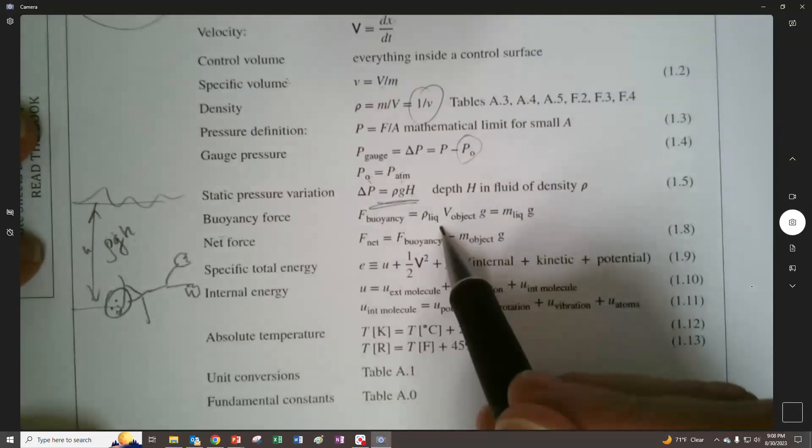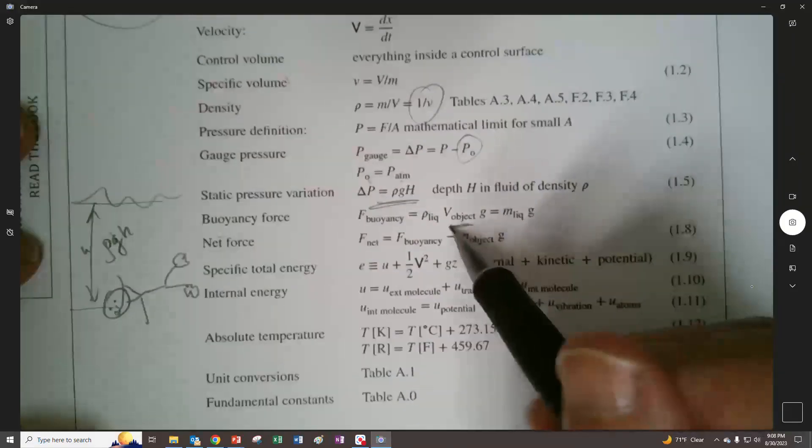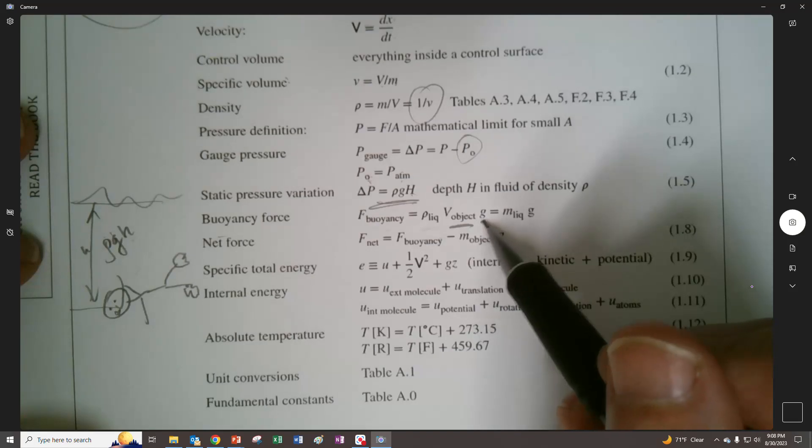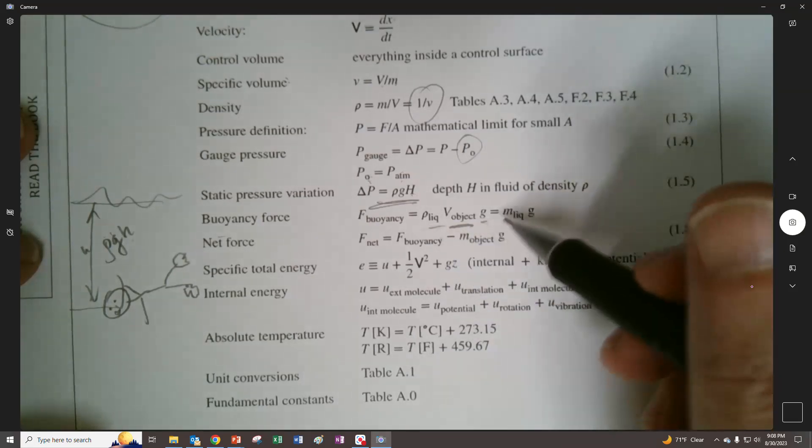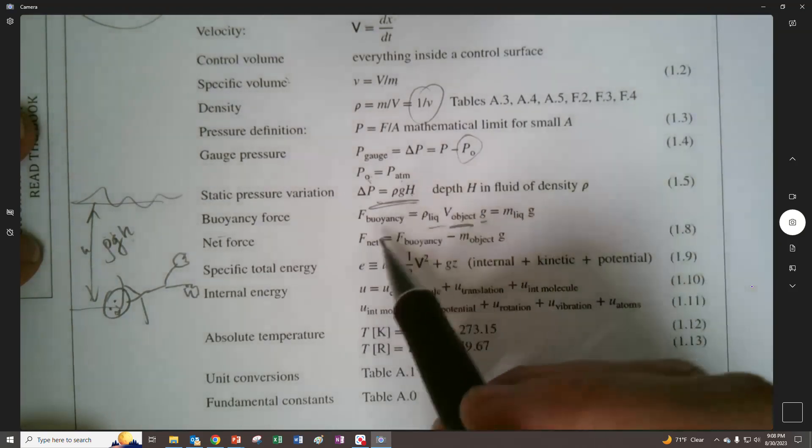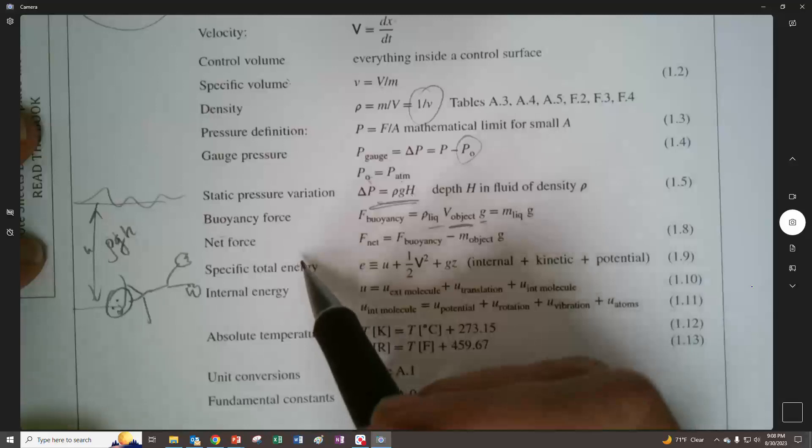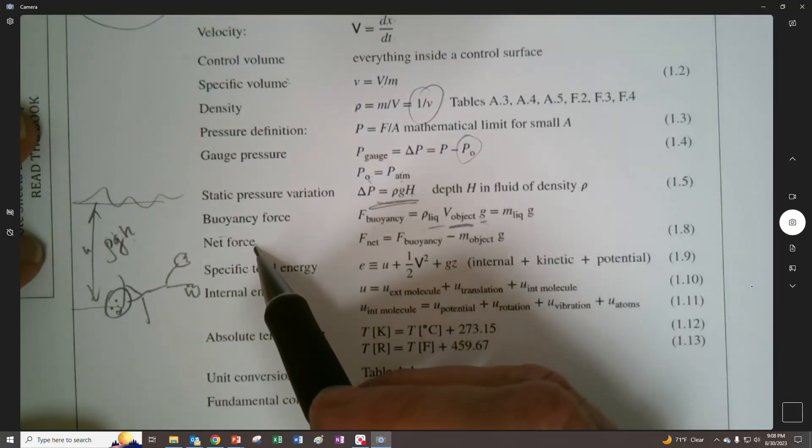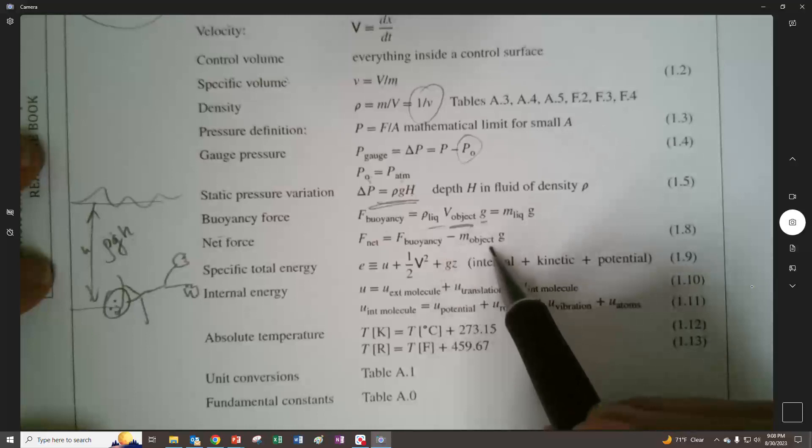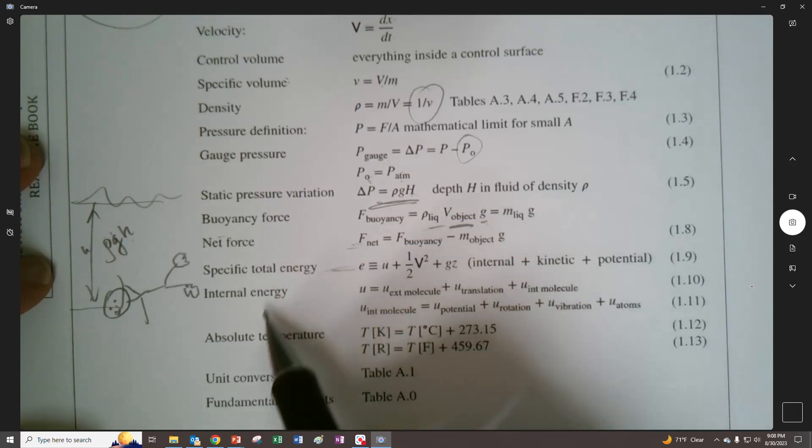Buoyancy force, right? That's our good friend Archimedes. It's the volume of the object times the weight density of the thing. It's the volume of the thing displaces and multiply it by gamma or times density and g. Net force, sure. This is a free body diagram thing, so I wouldn't bother looking at this.